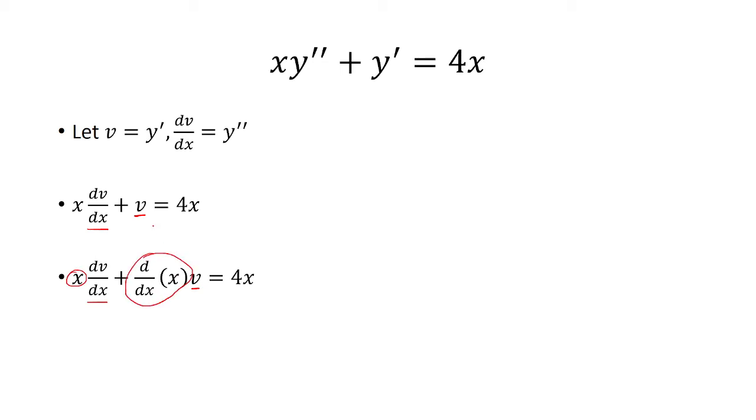Because the derivative of x is 1, you can think of it as a 1 being in front here. So really this is just the product rule, the derivative of xv equals 4x.